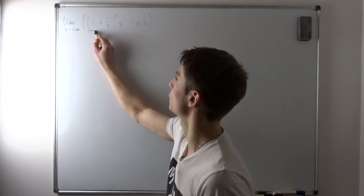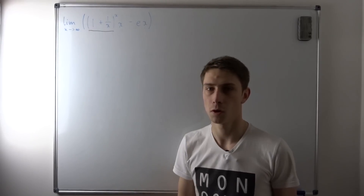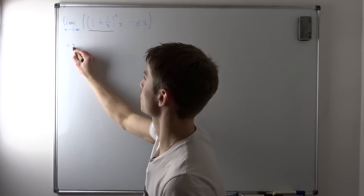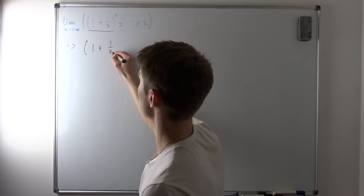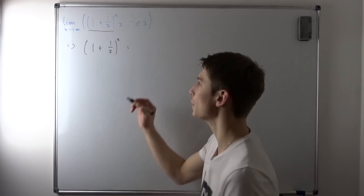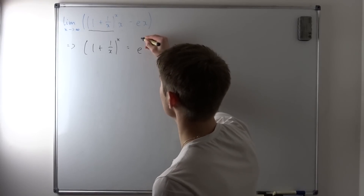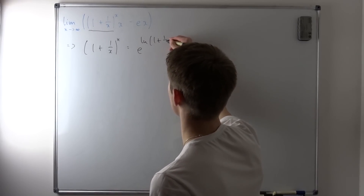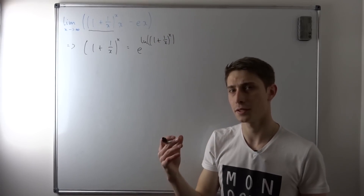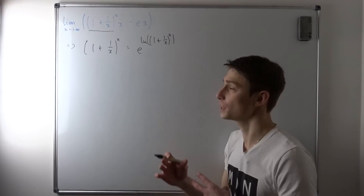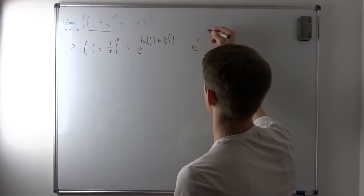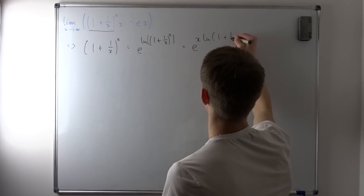To do this we are just taking a look at this first part right here: 1 plus 1 over x, to the x power. We can rewrite this a bit equivalently — that's equivalent to e to the natural log of 1 plus 1 over x to the x power. Now we can use the natural log property and bring this exponent to the outside. So what we end up with is e to the x times the natural log of 1 plus 1 over x.